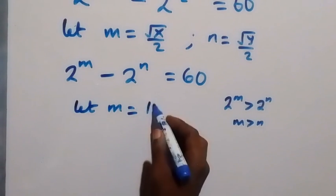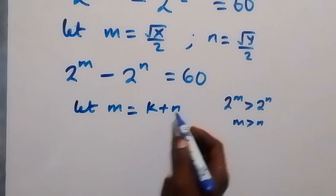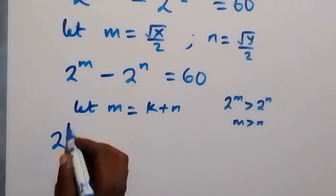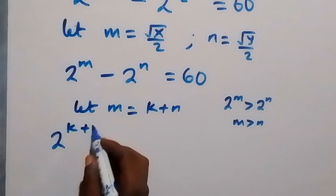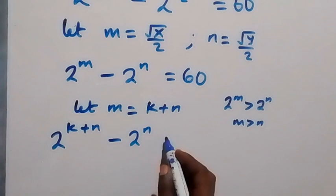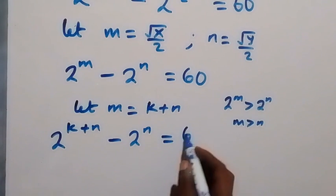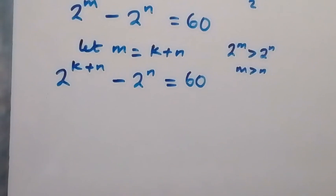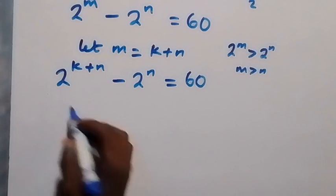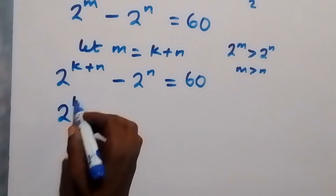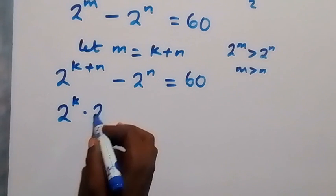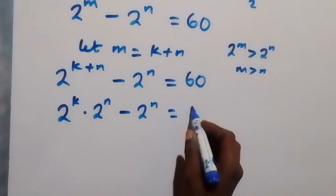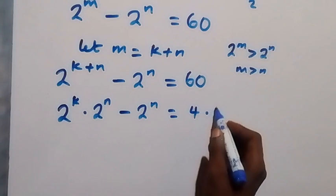We can write m as n plus a certain number k. Let m equal k plus n. So when we write this in the form of k and n, we have 2 raised to power (k + n), then minus 2 raised to power n, equals 4 multiplied by 15.